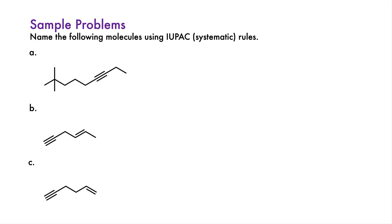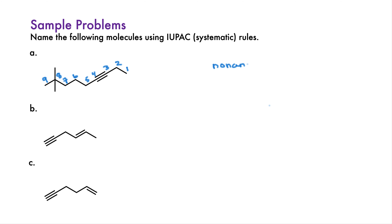Here are some sample problems. Pause and try to name these molecules using the systematic IUPAC rules. In the first problem, the longest chain containing the triple bond is horizontal and has nine carbons. We can number from the right to give the triple bond the lowest possible number. The parent alkane with nine carbons is nonane. We change the -ane ending to -yne, which gives us nonyne. The triple bond is at the 3 position. There are two methyls, so this is a dimethylnonyne. Finally, the methyls are assigned the 8 and 8 positions.